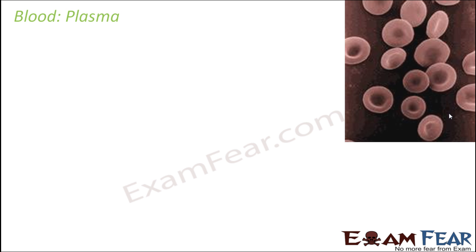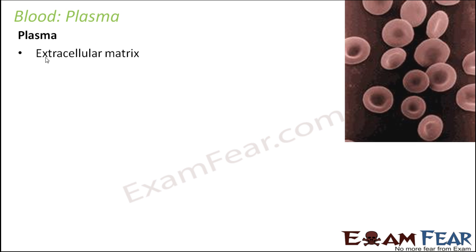Let's start with plasma. Plasma is the extracellular matrix. Now the big term — extracellular. Extra means outside, something which is outside. Cellular means cell. So something which is outside the cell. So plasma basically means that when you look at blood,